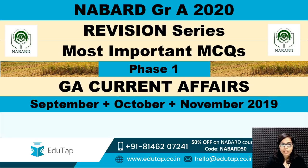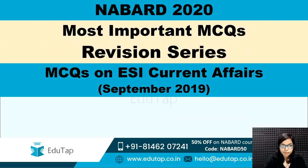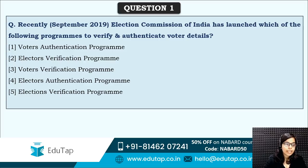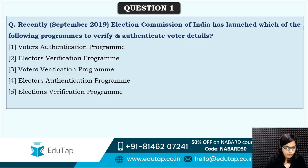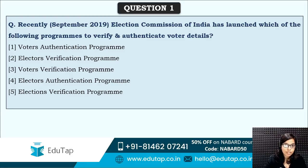First, we will start with the September ESI Current Affairs. The first question is: recently, the Election Commission of India has launched which of the following programs to verify and authenticate voter details? There is a program launched by the Election Commission of India — what is the name of that program? Five options are given; you have to tell me the correct answer.